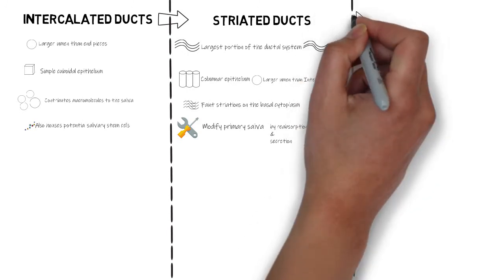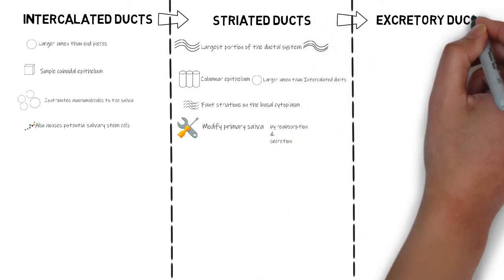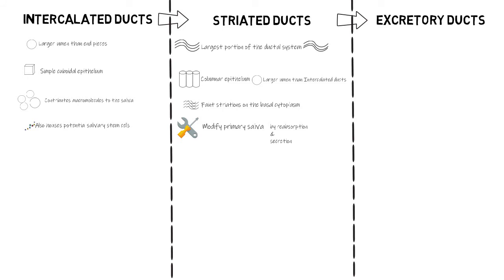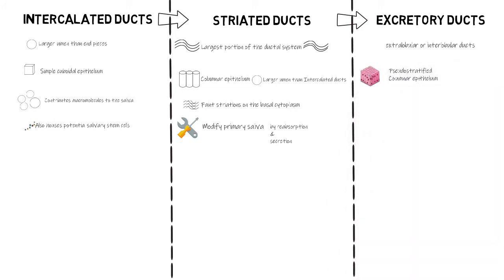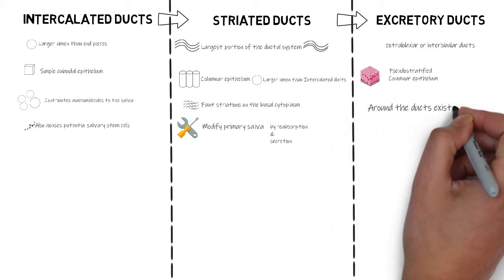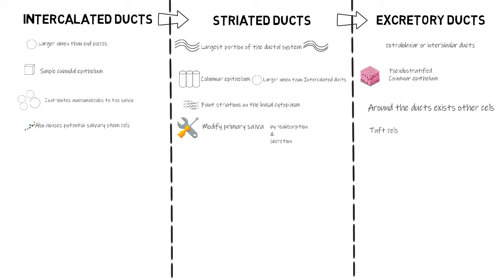After modification, the saliva goes to the excretory ducts, which are located between or outside the lobules of the gland. The excretory ducts have pseudostratified columnar epithelium, which may become stratified when nearing the oral cavity through the main excretory duct. Occasionally along the excretory ducts are tuft cells around which nerve endings are found, as well as lymphocytes, macrophages, and other cells. The saliva finally exits the gland into the oral cavity through the main excretory duct.